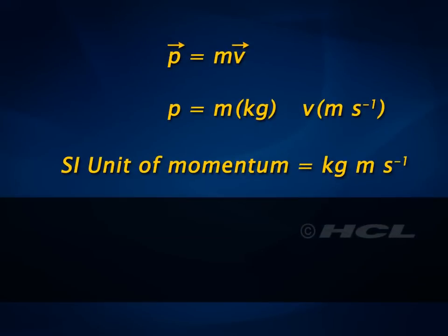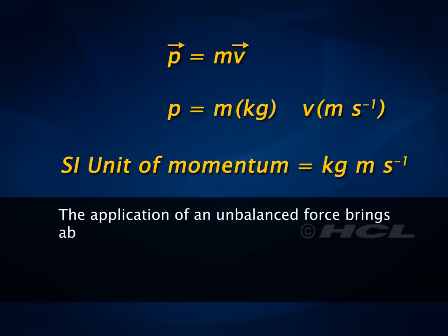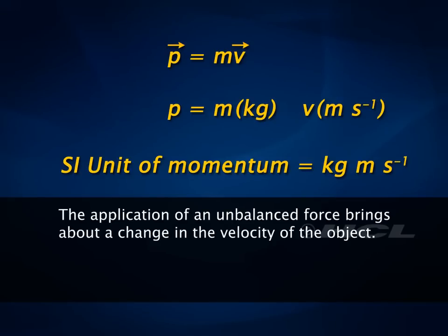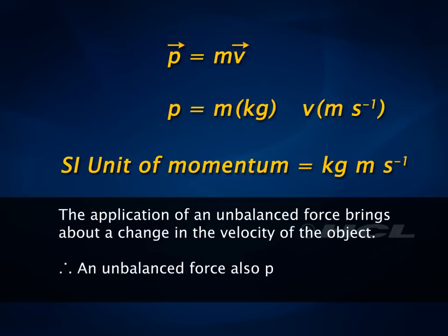The SI unit of momentum is kilogram meters per second. We know that the application of an unbalanced force brings about a change in the velocity of the object. Momentum is the product of mass and velocity, therefore an unbalanced force also produces a change of momentum.